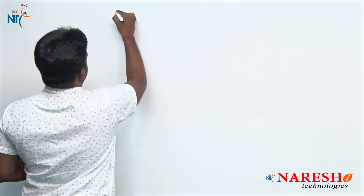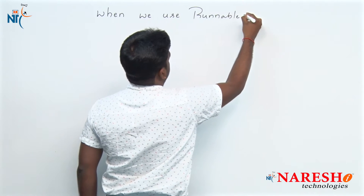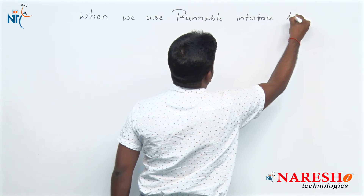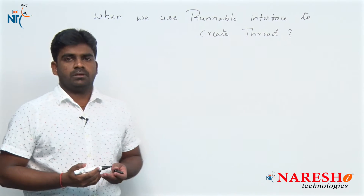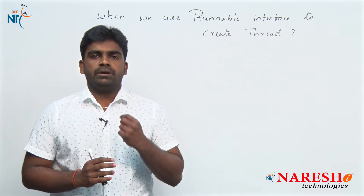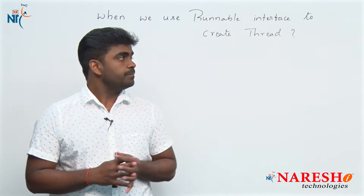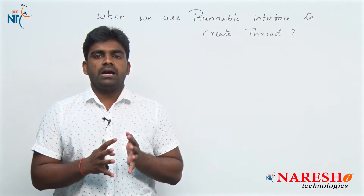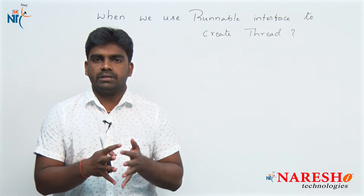Hi everyone, welcome to Nourish Technologies. This is Srinivas. In this session, we will see one important interview question in Java: when do we use the Runnable interface to create a thread? We know that if you want to create a thread, we have two options — either extending from the Thread class or implementing the Runnable interface. Why have they given two options? This is a very important question they will ask in every interview.